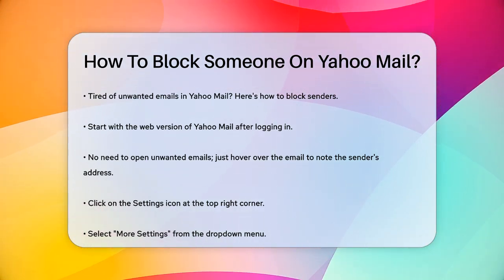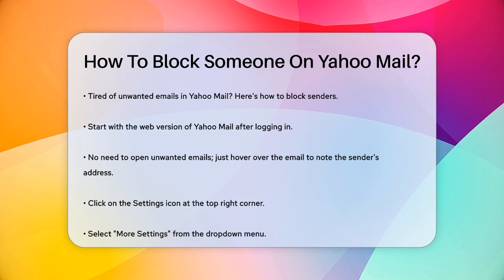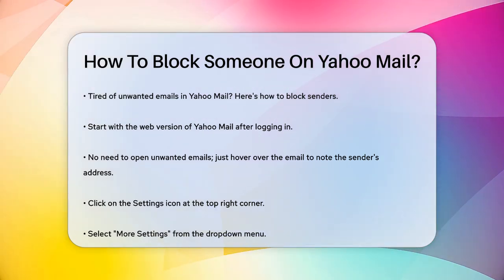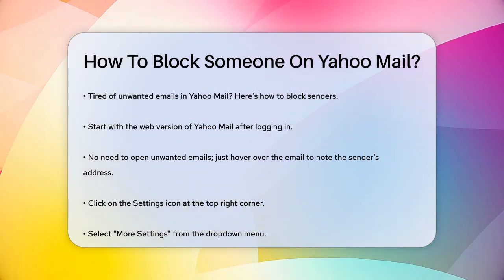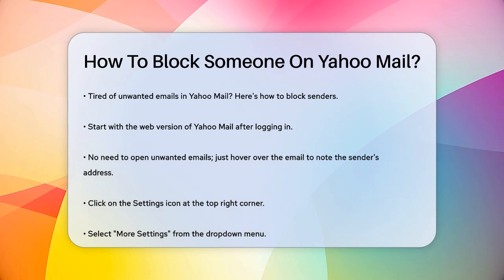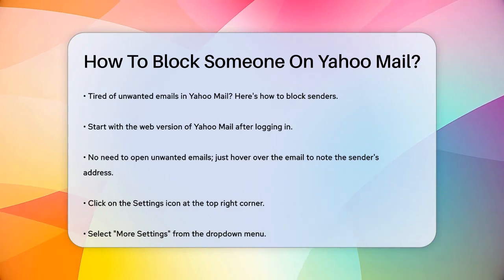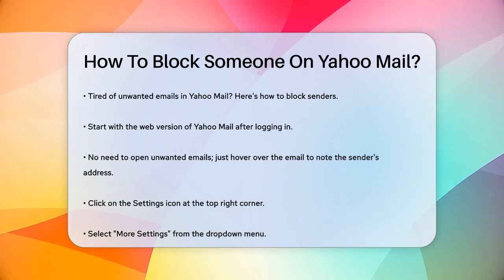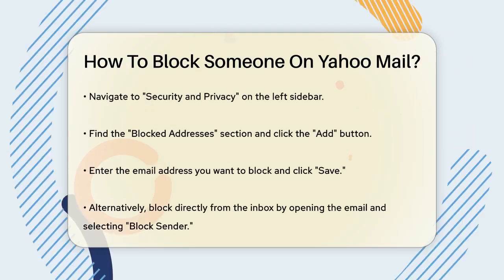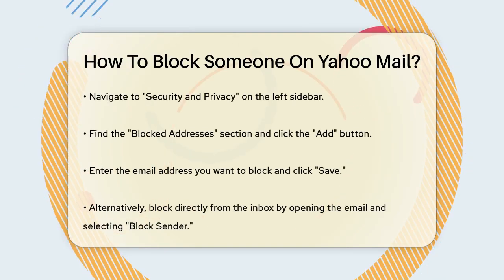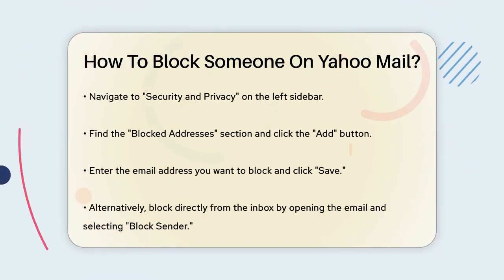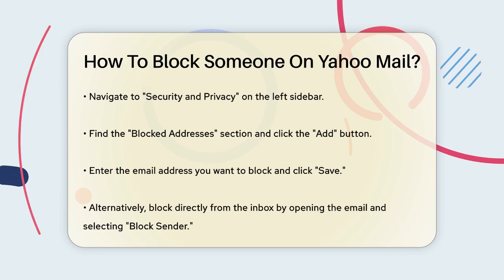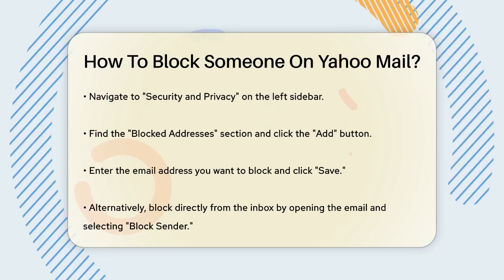Select the More Settings option, which looks like three dots. On the left sidebar, click on Security & Privacy, then find the Blocked Addresses section. Here, you'll see an Add button with a plus sign. Click on it, enter the email address you want to block, and then click Save. This will add the sender to your blocked address list.